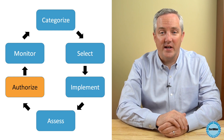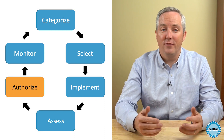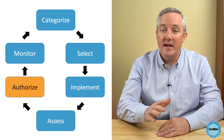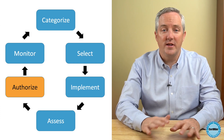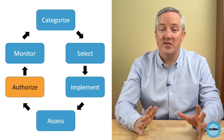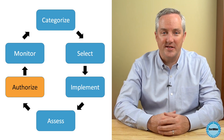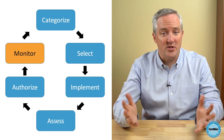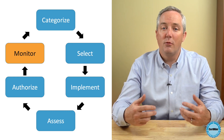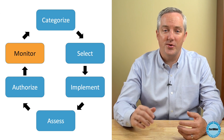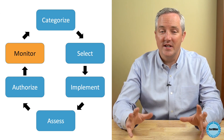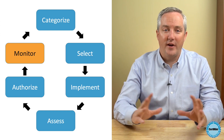After we finish that assessment, we enter step five, where we authorize operation of the information system. In the federal government, authorization is a very formal process where a senior government official must accept any remaining risks. Then once the system is authorized and running, we move on to step six, where we monitor the security controls on an ongoing basis to ensure their continued effectiveness and make sure we respond to any environmental changes.